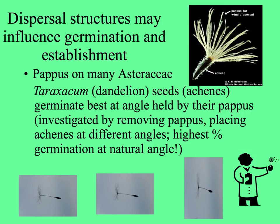with the pappus — this set of bristles — these appendages hold the seeds away from the soil somewhat. In an experiment you can see which angle of seed germinates the best. It turns out that if you remove the pappus and place the seed at different angles, the highest percent germination is achieved at the natural angle.